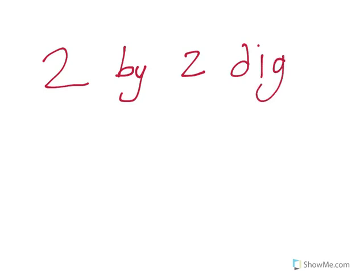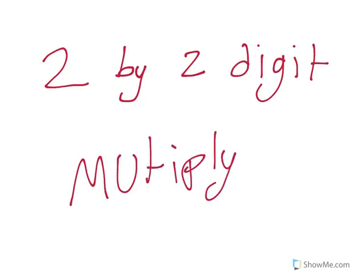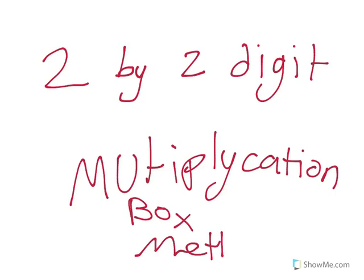Call it 2 by 2. Yeah, I'll just do that color. 2 by 2 digit multiplication box method. Cool. Well, thanks for teaching me that.